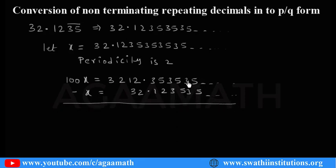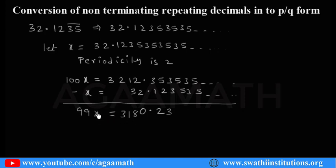When you subtract: the repeating decimal parts cancel out. Computing the difference — 5 minus 2 is 3, 3 minus 1 is 2, 2 minus 2 is 0, 11 minus 3 is 8 — so 100x minus x gives 99x equals 3180.23, which means x equals 3180.23 by 99.